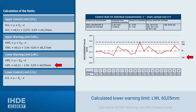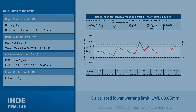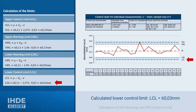We get the lower warning limit from the mean value 60.11 minus 1.96 for EW times the standard deviation of 0.03 mm. This results in a lower warning limit of 60.05 mm, also shown on the control chart. For the lower control limit, LCL equals the mean 60.11 minus 2.576 for EC times the standard deviation 0.03. This results in a lower control limit of 60.03 mm, also shown on the control chart.